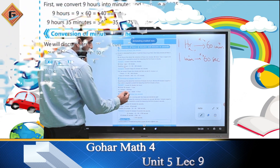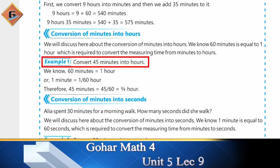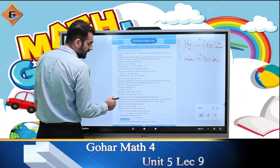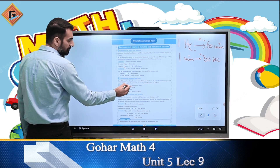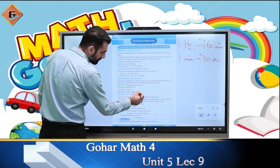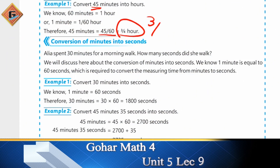Convert 45 minutes into hours. अब 45 minutes क्योंकि 60 minutes से कम है, यानि एक hour से भी कम होगा, तो answer हमारे पास fraction में ही आएगा। 45 को जब हमने 60 से divide किया और इसको simplify किया, तो हमारे पास answer आया 3/4 hours।